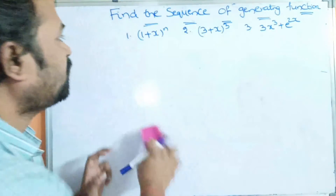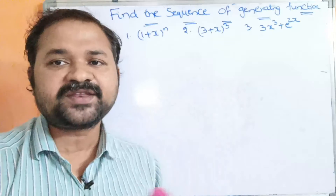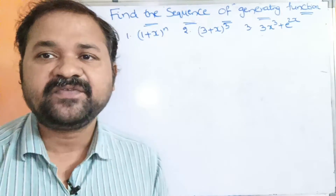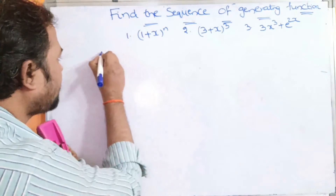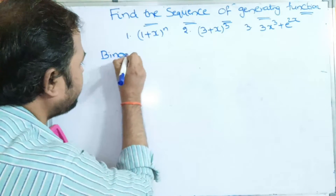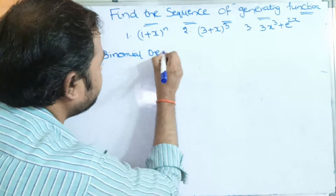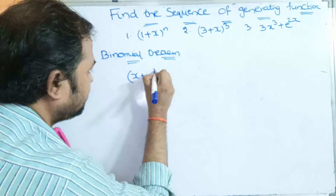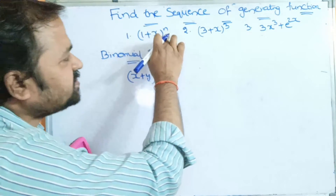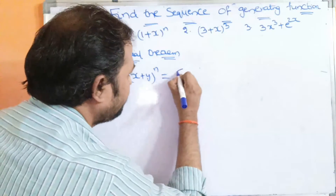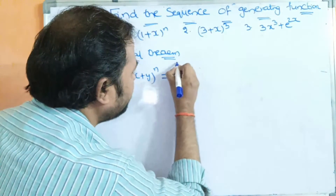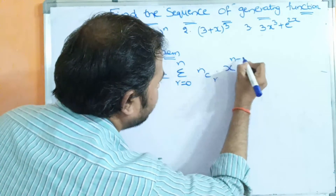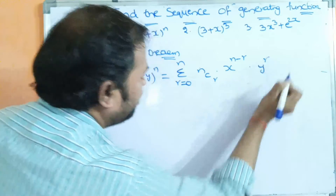Now let us solve these three problems. For the first problem, (1+x)^n, and the second problem (3+x)^3, we have to use the binomial theorem. The binomial theorem states: (x+y)^n = sigma from r=0 to n of nCr · x^(n−r) · y^r.